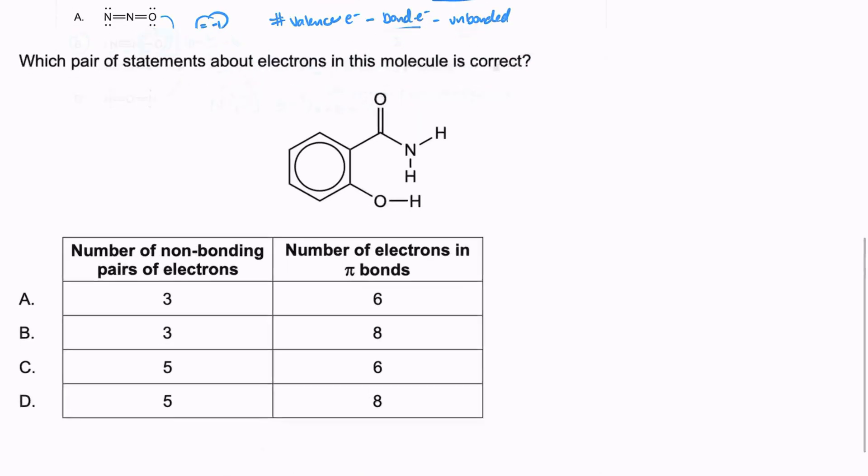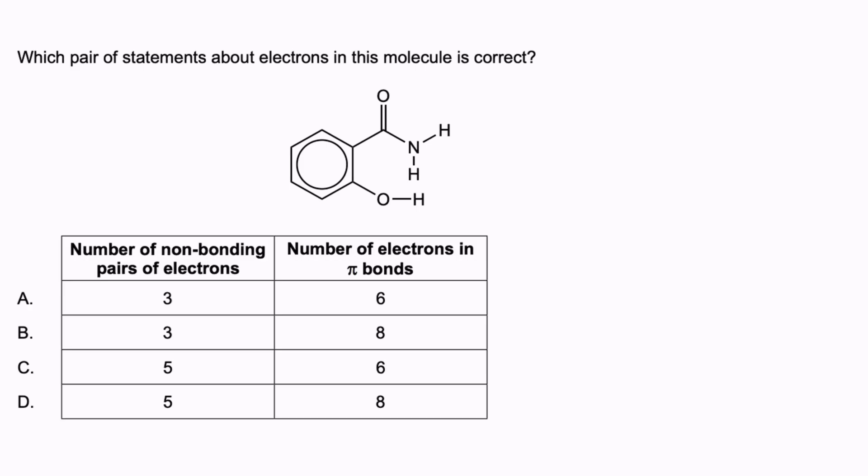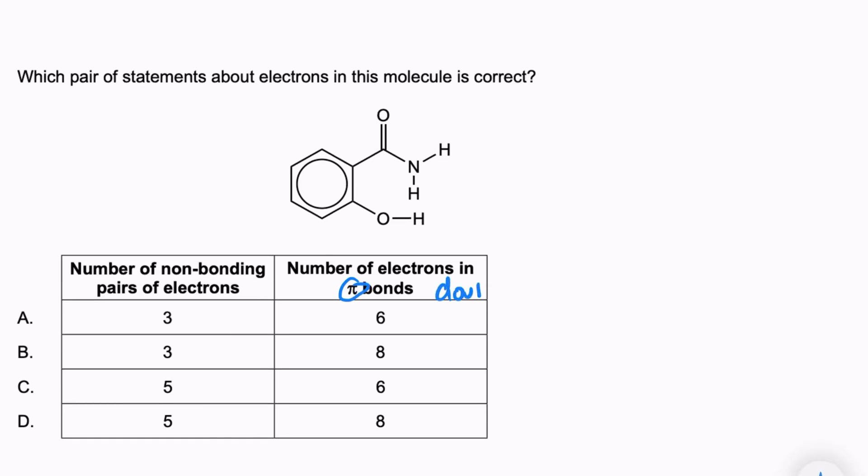The last question we're going to look at for this video - this might overwhelm you a little bit just looking at the picture, if you don't like looking at organic molecules, but it's actually a really easy question. It says, which pair of statements about electrons in this molecule is correct? So we have the number of non-bonding pairs of electrons and the number of electrons in pi bonds. Remember that pi bonds are found in double bonds.